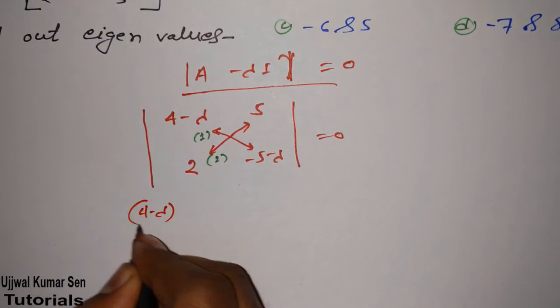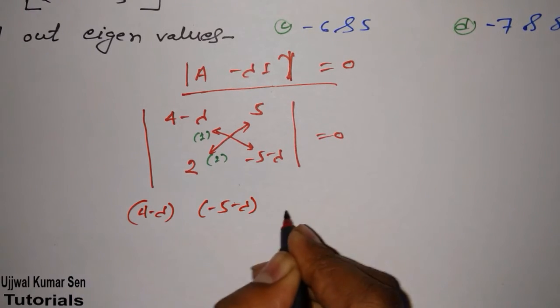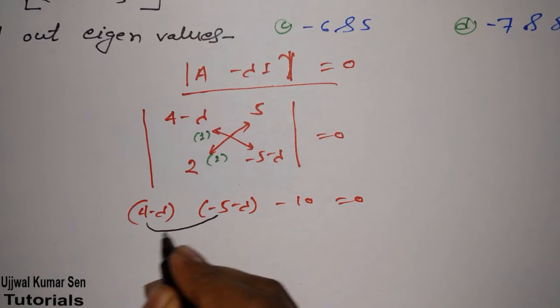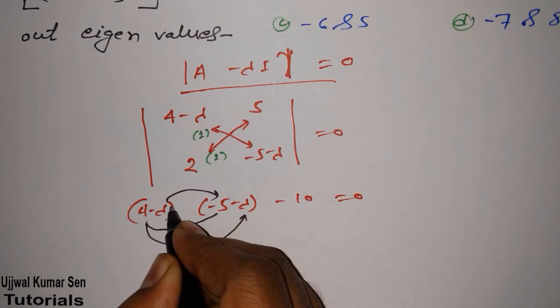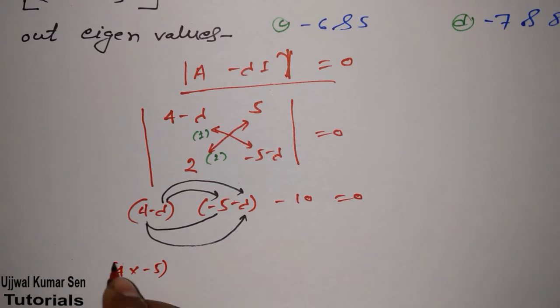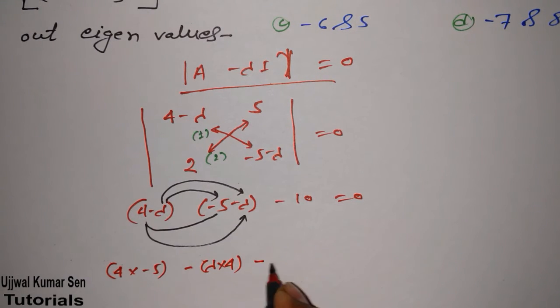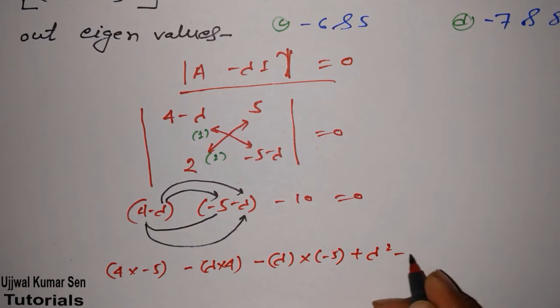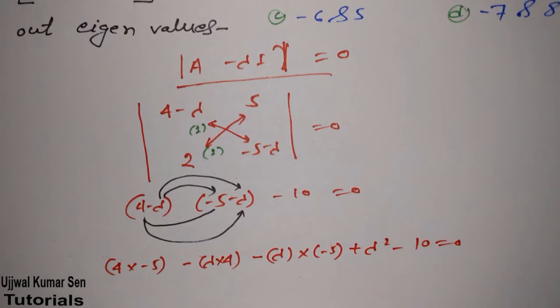So, 4 minus lambda times minus 5 minus lambda minus 10 equal to zero. We have to do multiplication here. So 4 times minus 5, then 4 times minus lambda, minus lambda times minus 5, and then minus lambda times minus lambda. So plus lambda square minus 10 equal to zero.